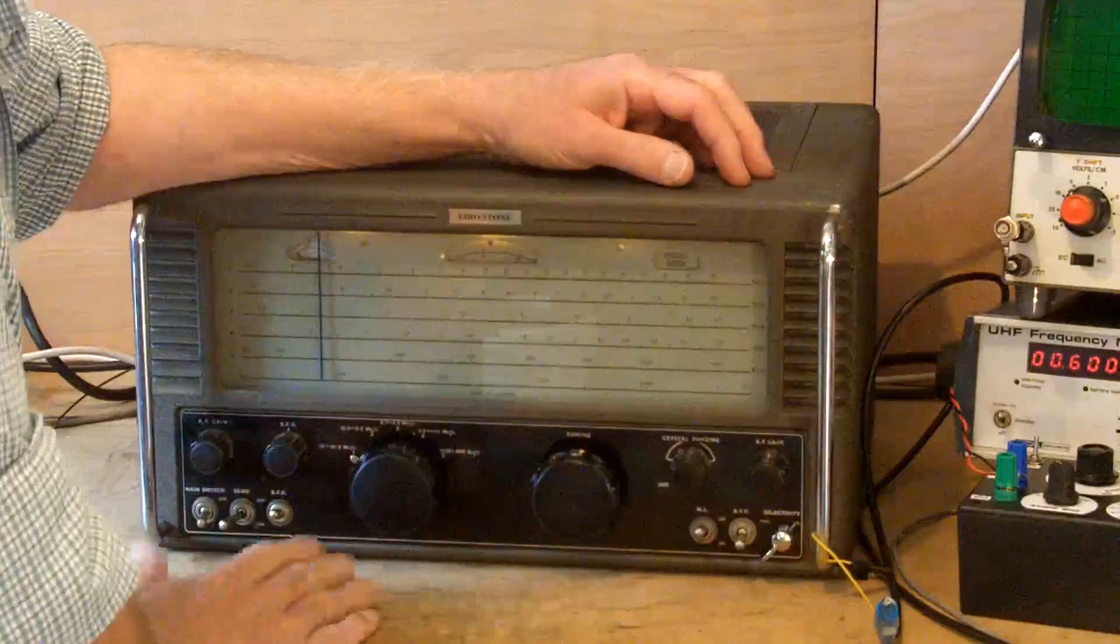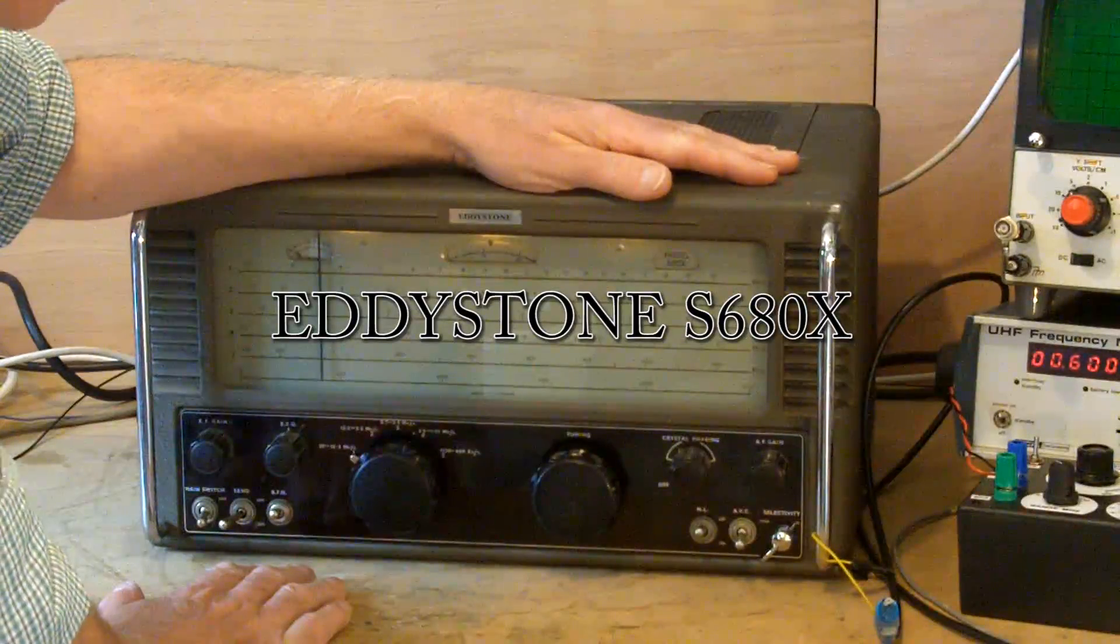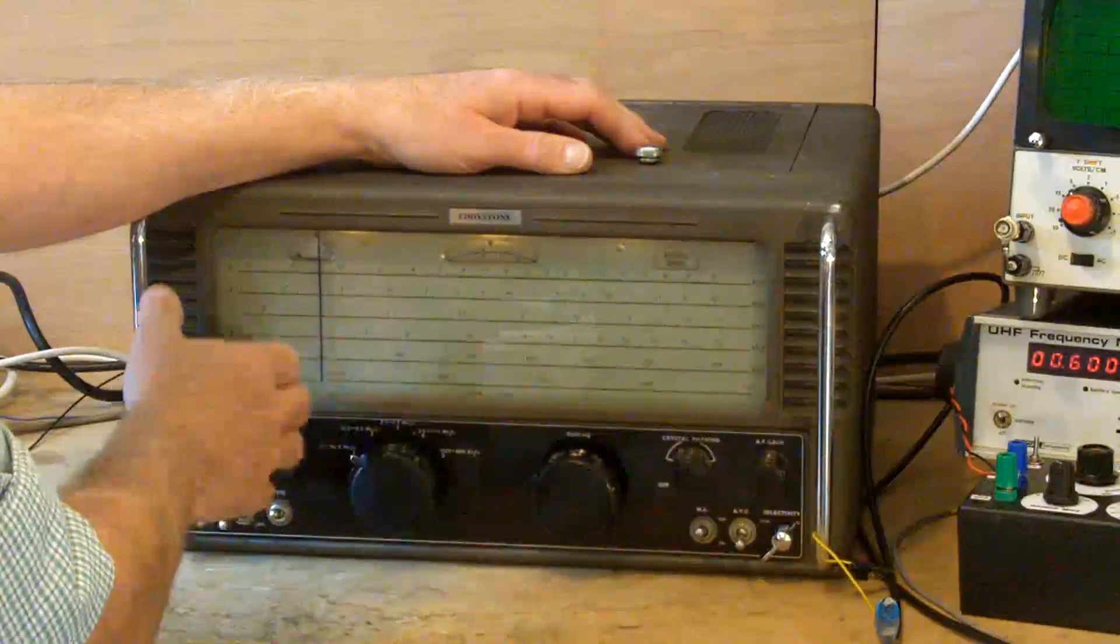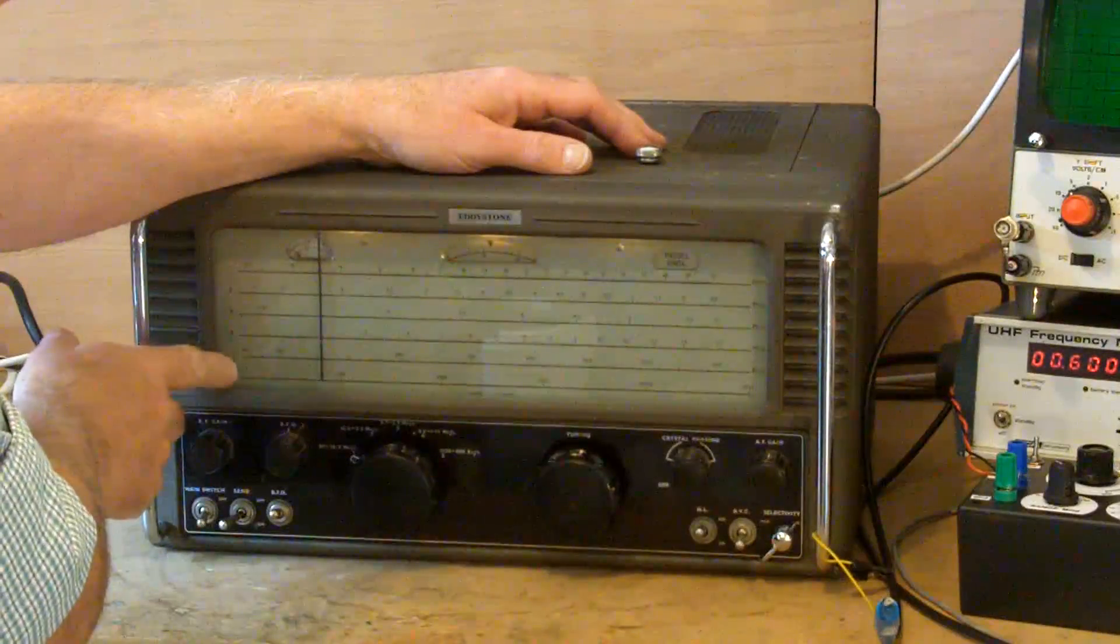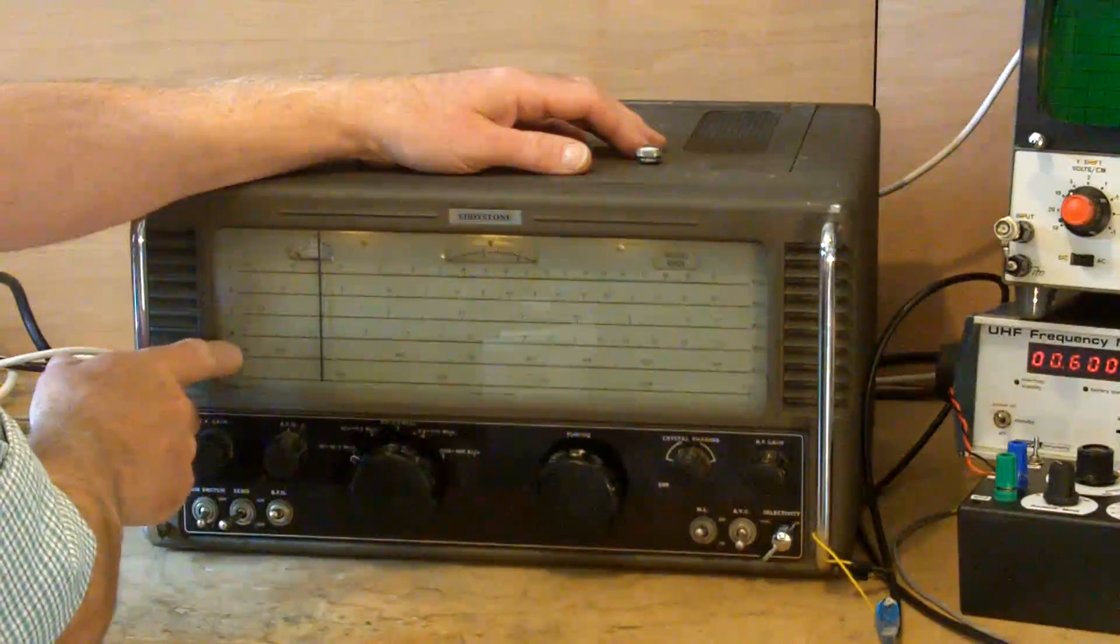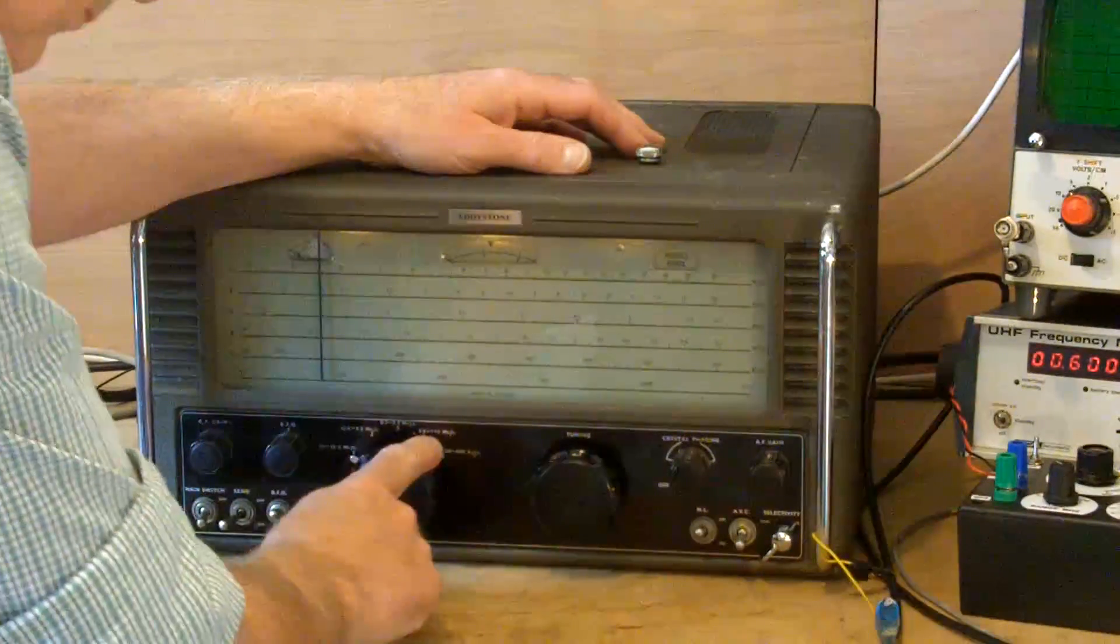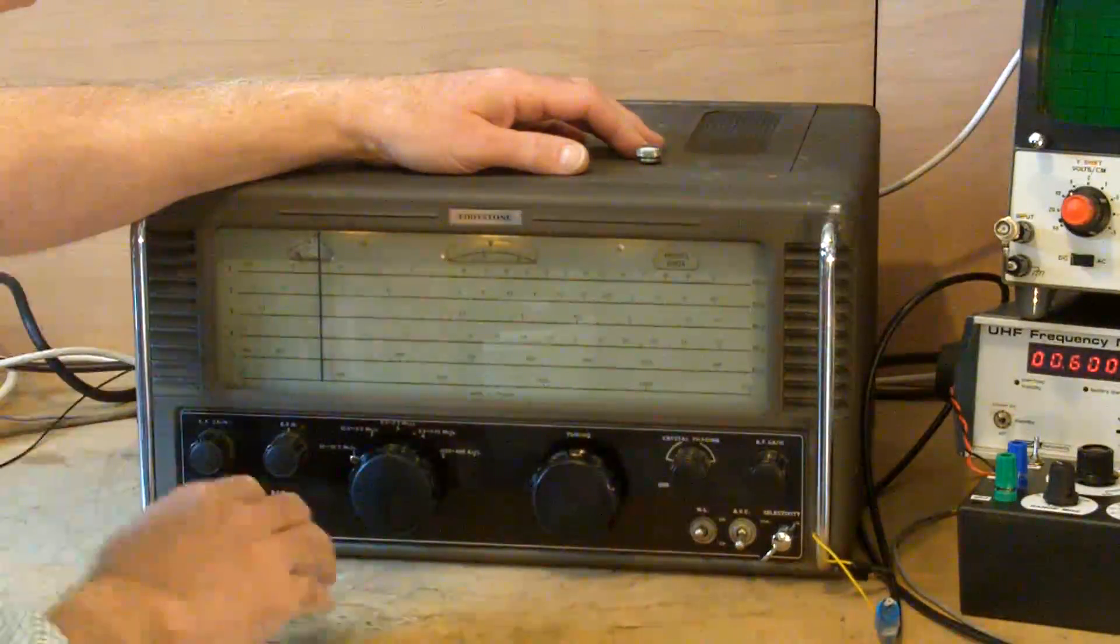So anyway, I hope you enjoy it. This is my Eddystone S680X communications receiver and I'm just checking the alignment. That is to make sure that when the pointer is on say 15 megahertz, that it's actually receiving stations at 15 megahertz. There are five bands on the radio and four of the bands the alignment is very good, surprisingly so. But on band four, which covers 2.5 megahertz down to 1.1 megahertz, the alignment is a little bit adrift and I'll show you what it's doing.